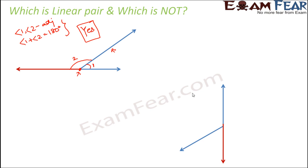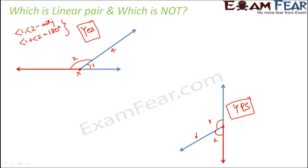In the second example, angle one and angle two lie on a straight line, forming 180 degrees. They also have a common vertex, a common arm, and no common interior points. Therefore, here also they form a linear pair.